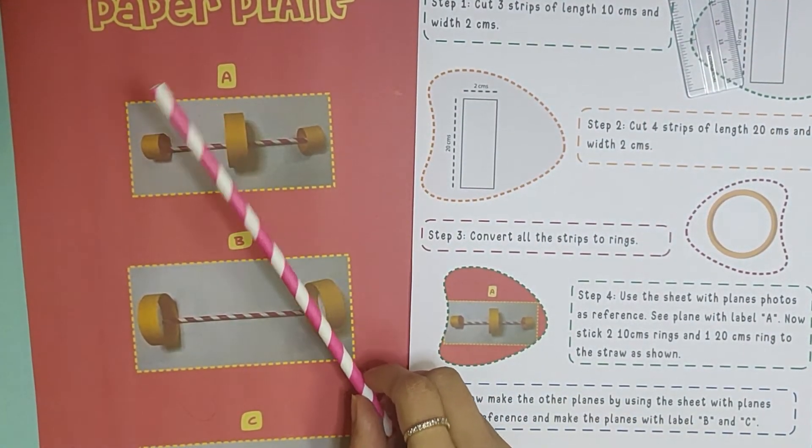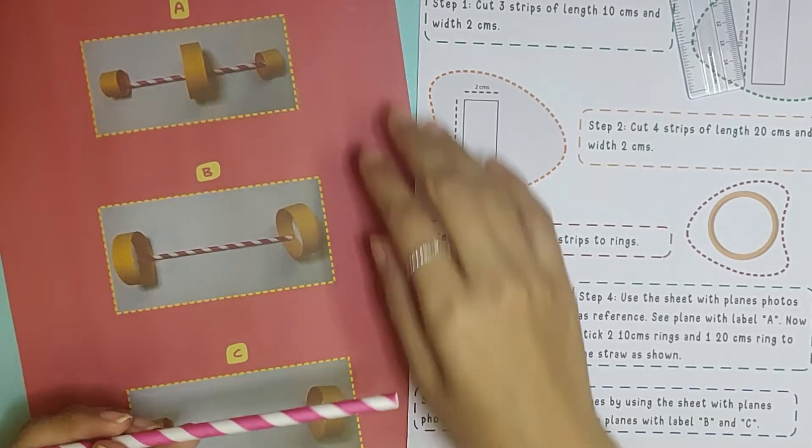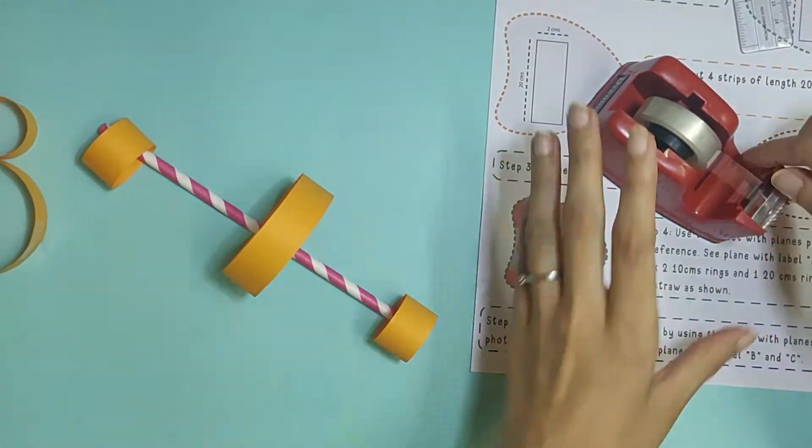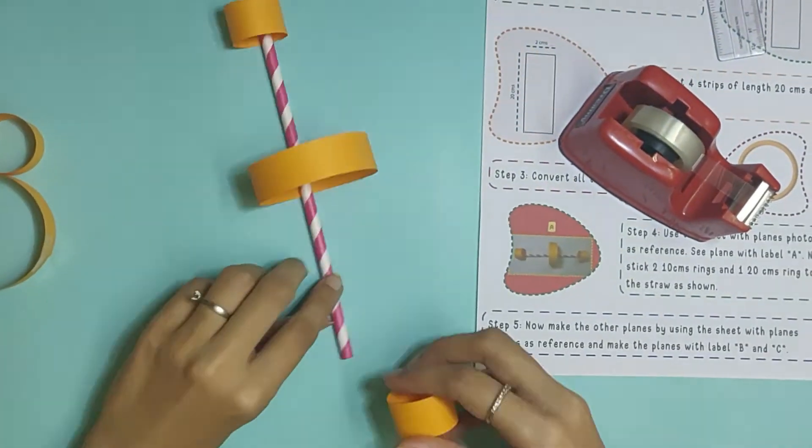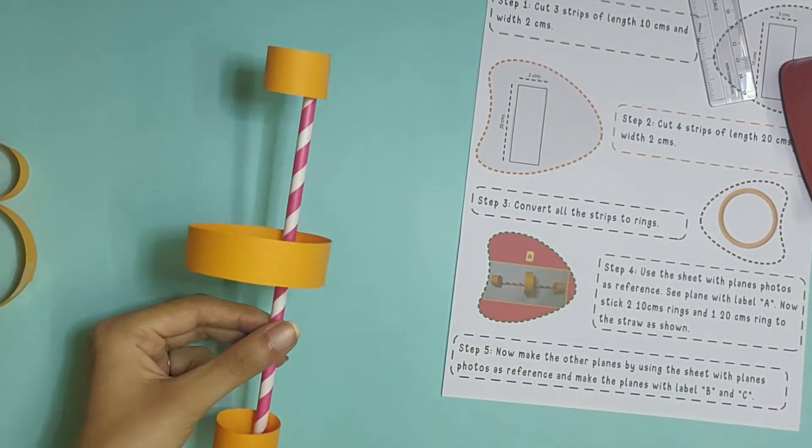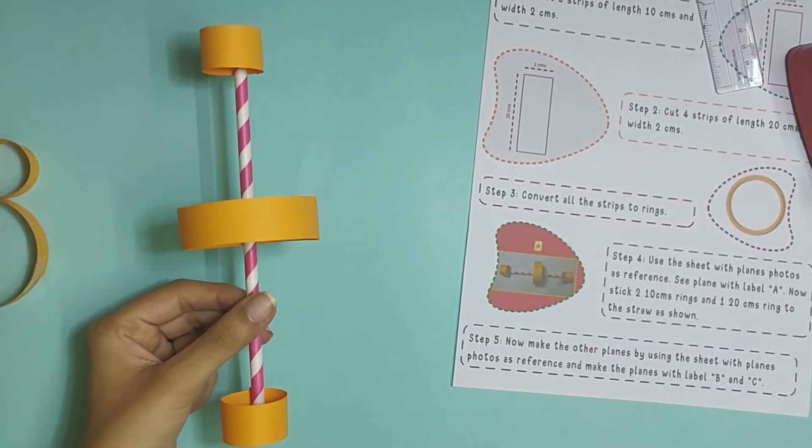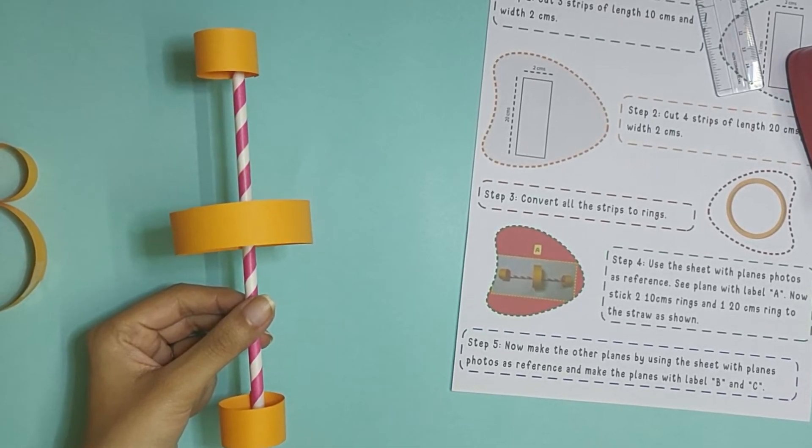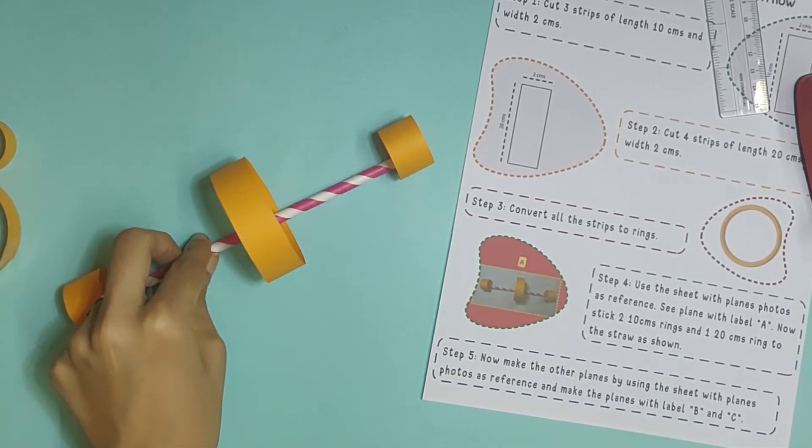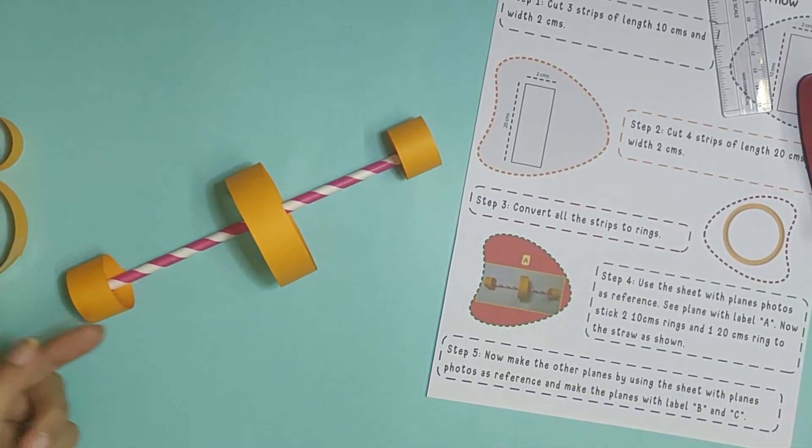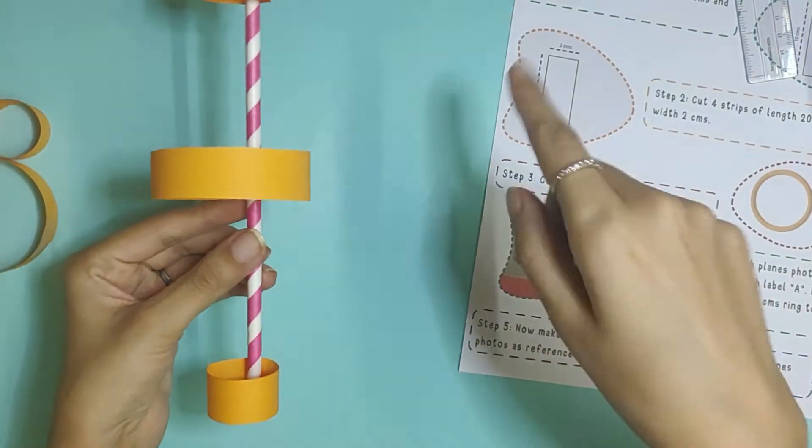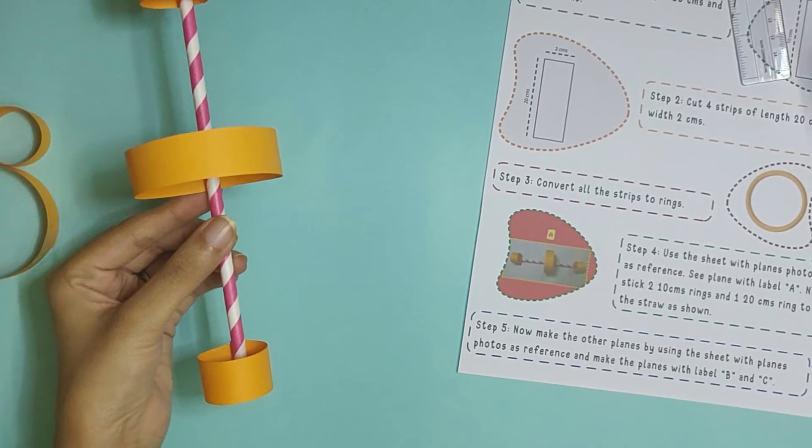Now that your rings are ready, all of these, let's go to step 4: use the sheet with plane's photo. This is the one. See plane with label A, this is the one, the top one. Now stick 2 10cm rings and 1 20cm ring to the straw as shown. There are 2 small 10cm rings in the corner and 1 big 20cm ring in the center of a straw. Let's put them together now.